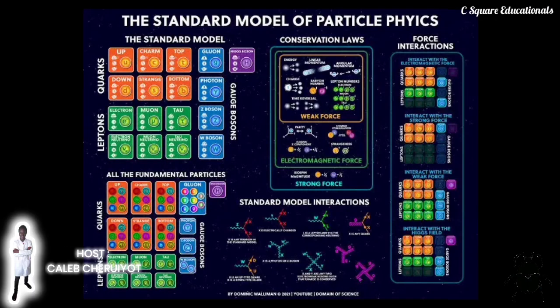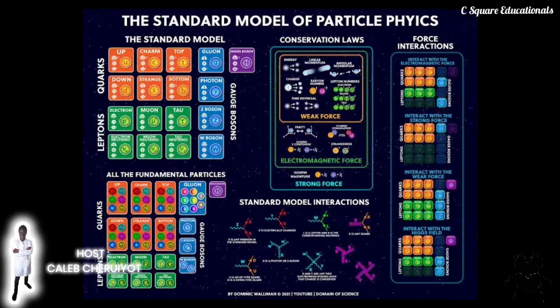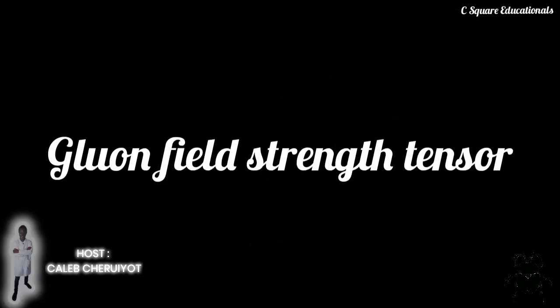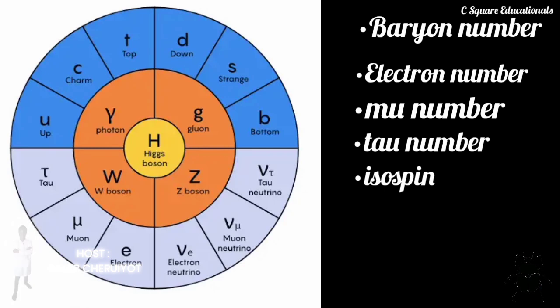Quarks and gluons carry color charge, which is always conserved like electric charge, and there is a continuity equation for such color charge currents. There are many other quantities in particle physics which are often or always conserved: baryon number (proportional to the number of quarks minus the number of anti-quarks), electron number, mu number, tau number, isospin, among others. Each of these has a corresponding continuity equation, possibly including source or sink terms.